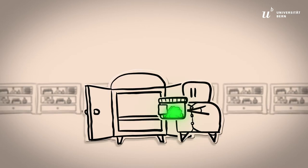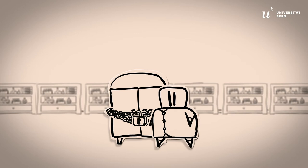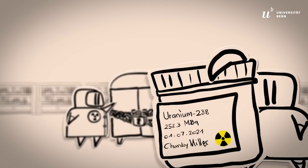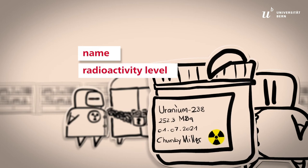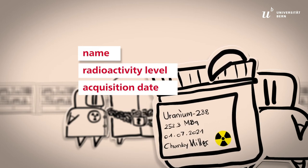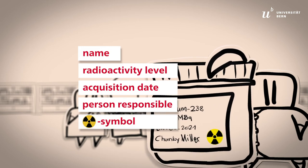Store radioactive sources safely in the designated place. As instructed by the radiation safety officer, the container must be labeled with the name of the radionuclide, the corresponding radioactivity level, the acquisition date, the name of the person responsible, and the radiation symbol.